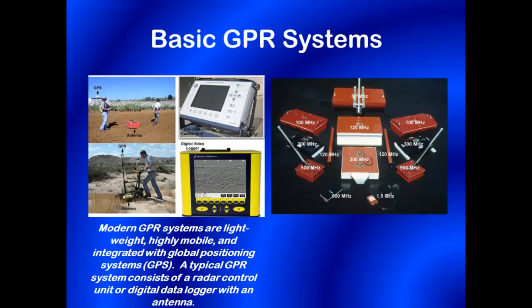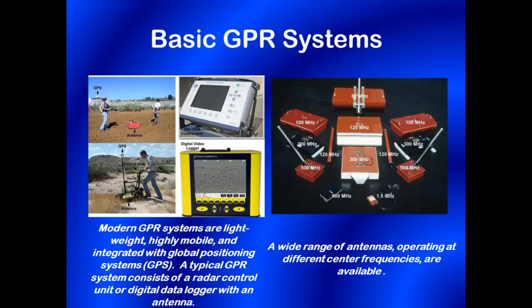Modern radar systems are well suited to soil investigations. A typical radar system consists of a control unit connected to an antenna. The control unit consists of a screen, microprocessor, and storage medium. Antennas are used to transmit and receive energy. A major constraint of GPR is the inverse relationship between exploration depth and resolution. Higher frequency antennas provide higher resolution of subsurface features, but are depth restricted. Lower frequency antennas provide greater exploration depth, but poor resolution of subsurface features. The antennas most commonly used in soil investigations have center frequencies between 100 and 500 megahertz.